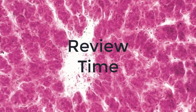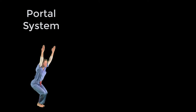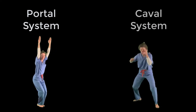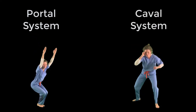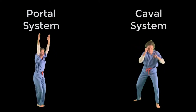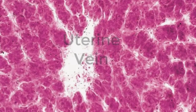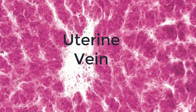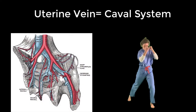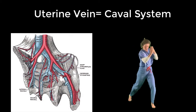Now for the fun part — a knowledge test. A vein will be called out and you perform one of the exercises based on whether that vein drains via the portal system or via the caval system. First: the uterine vein. This drains into the internal iliac, so it's part of the caval system.